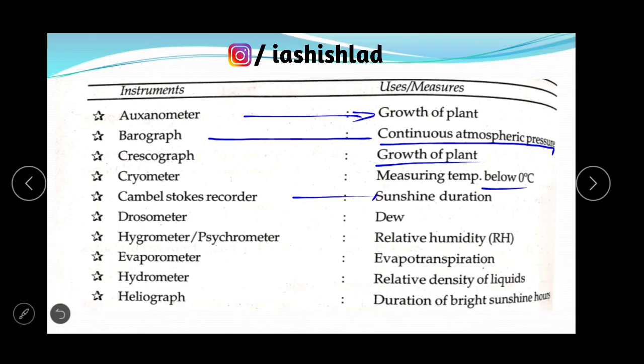Drosometer measures dew. Hygrometer or psychrometer measures relative humidity. Evaporometer measures evapotranspiration. Hydrometer measures relative density of liquids. Heliograph measures duration of bright sunshine hours.